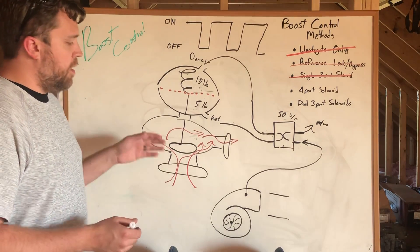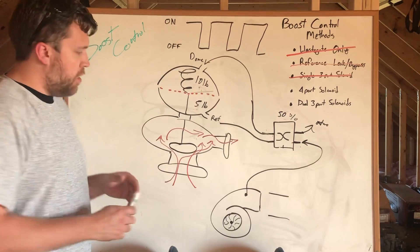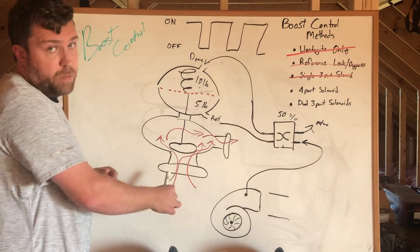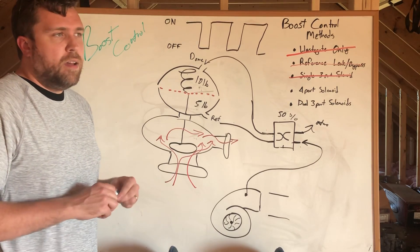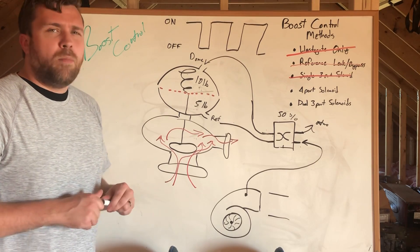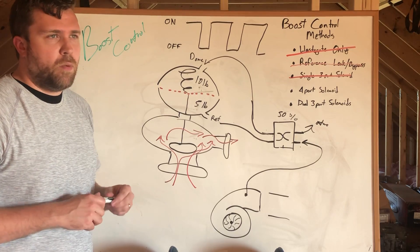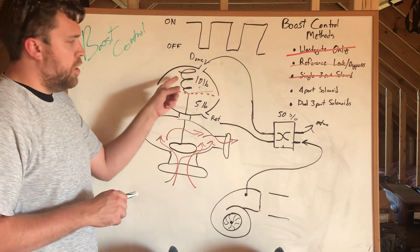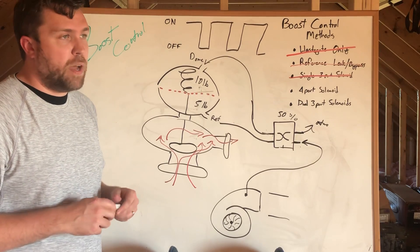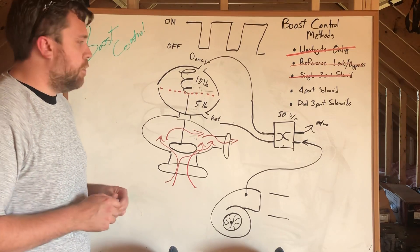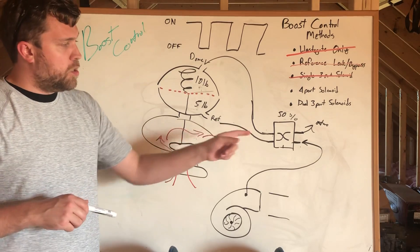Again, when you start dealing with back pressure being the thing that's opening your gate, you really need to be careful with that. It's a little unpredictable when you start doing that, and you really need to size your spring really small—like a one or two pound spring—just because so much of the control is now in the hands of the boost controller.